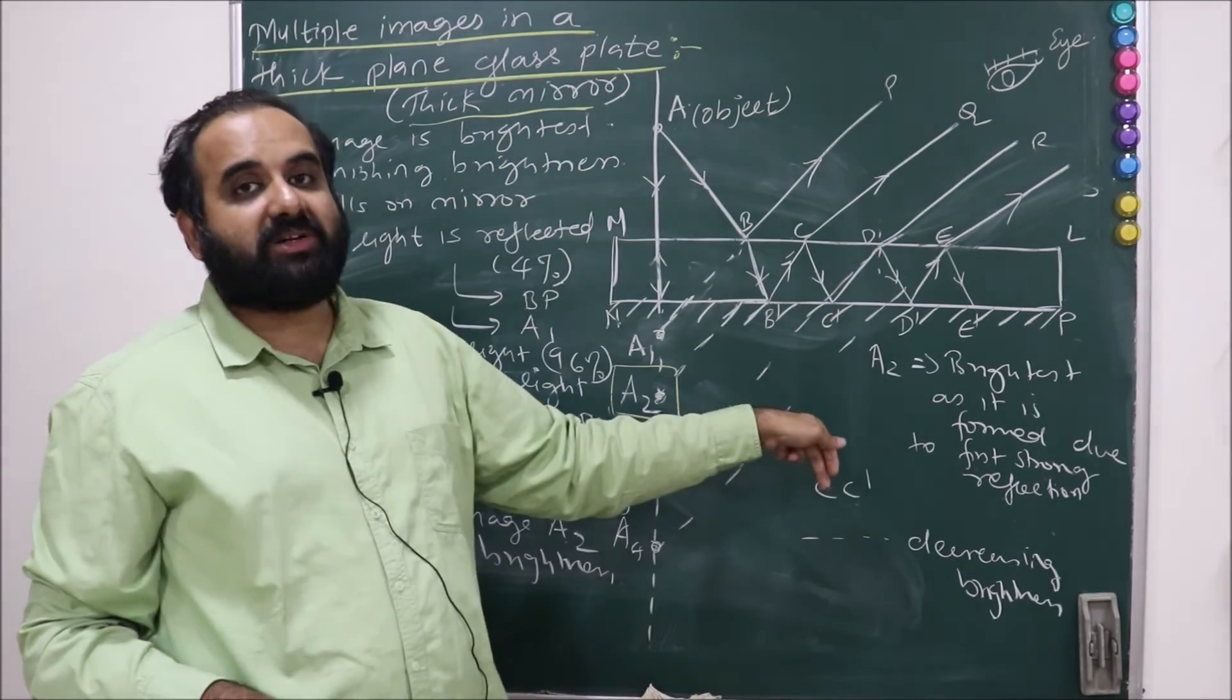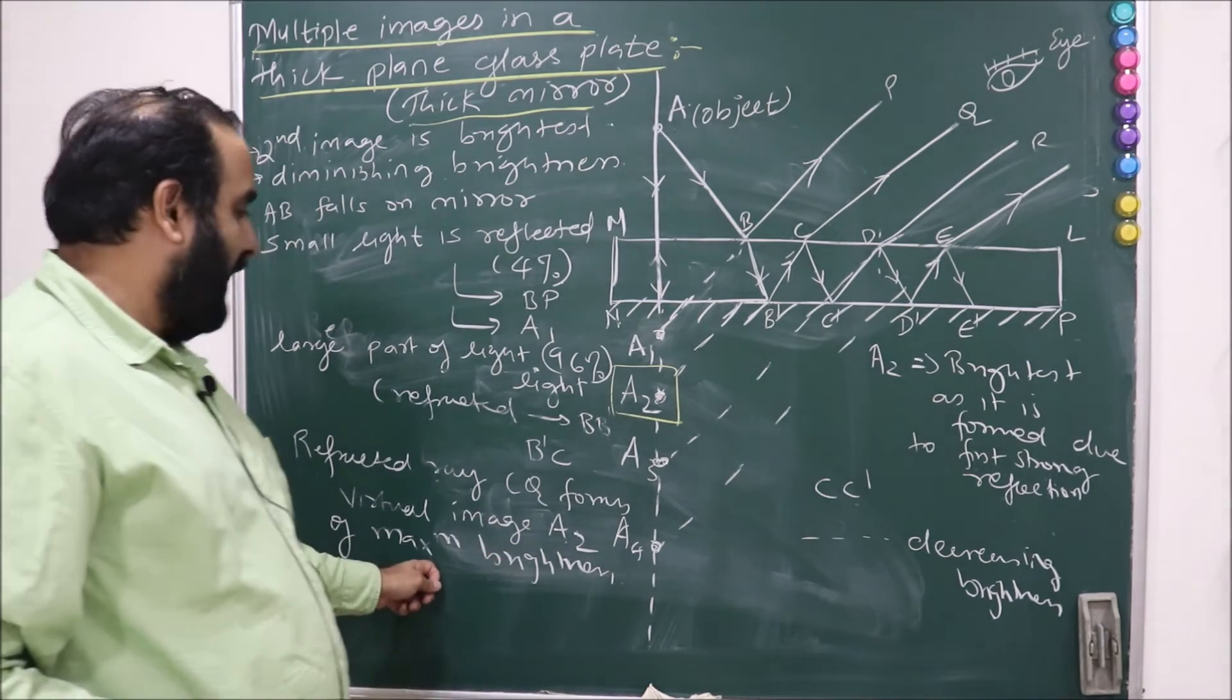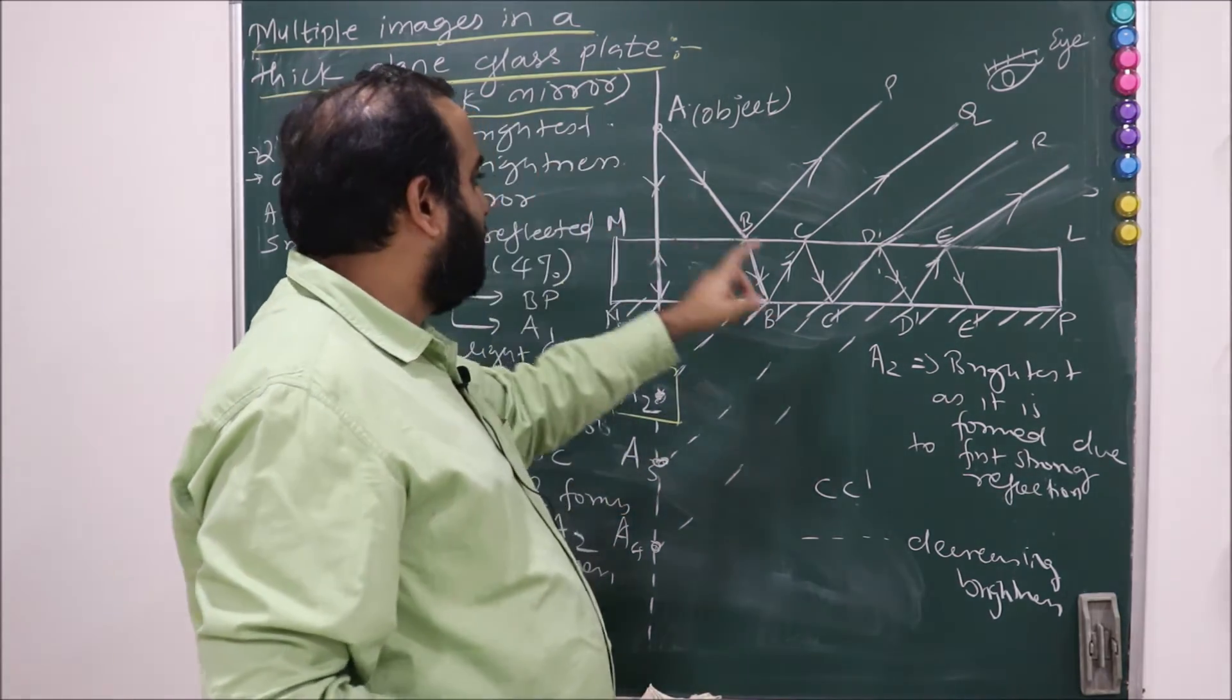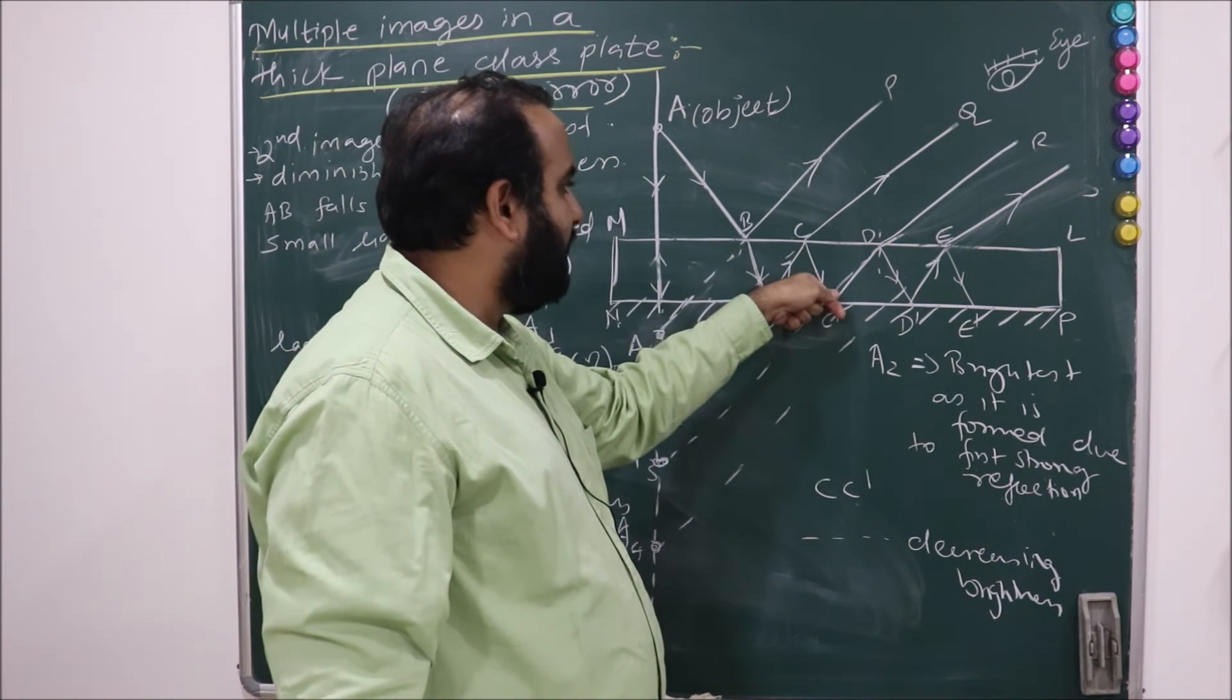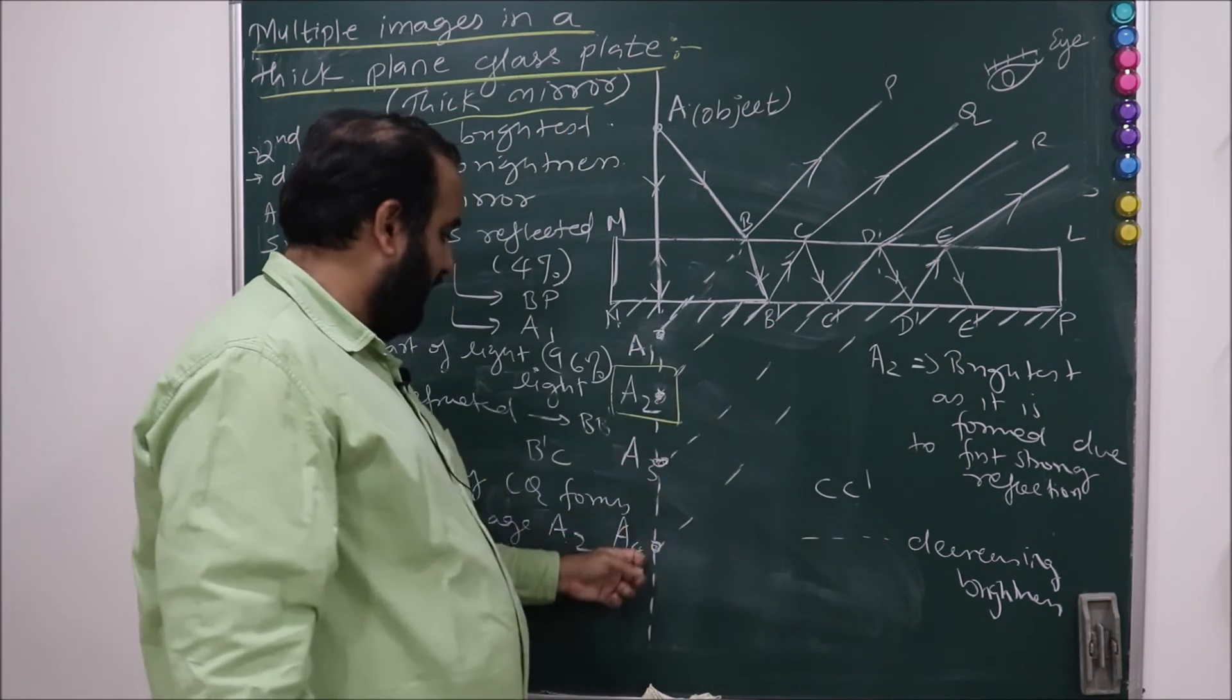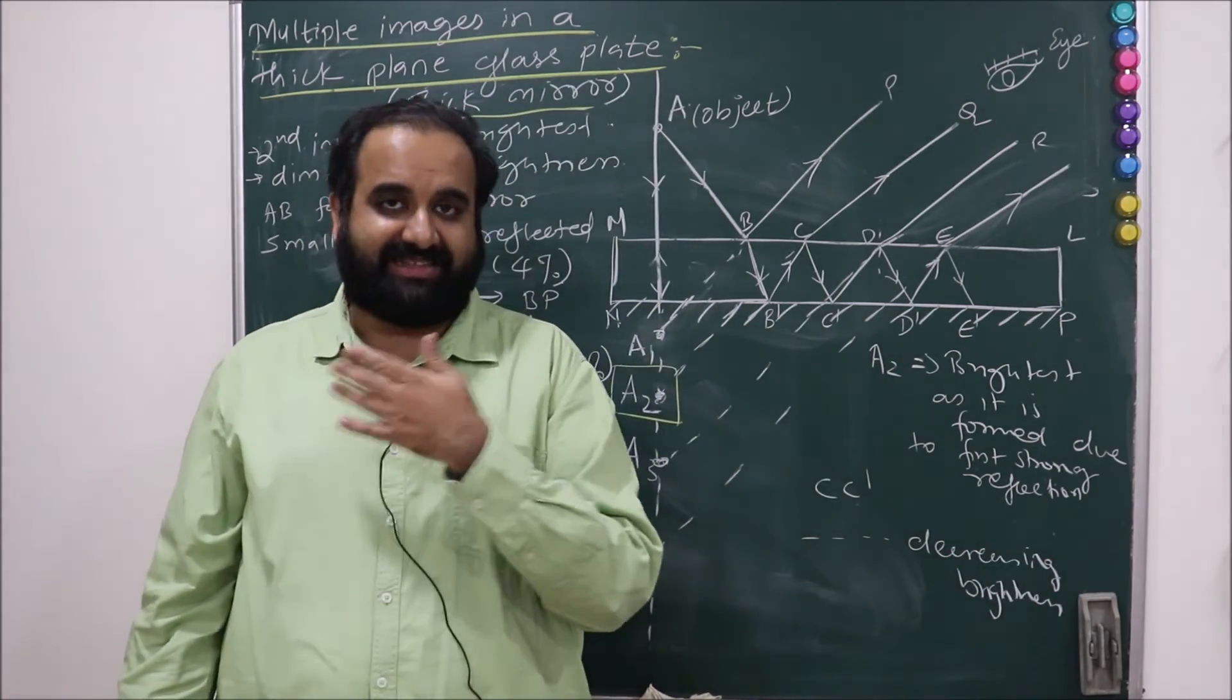We are calling it the first strong reflection because 96% of the light goes inside and this refracted ray CQ forms the virtual image A2, which is of maximum brightness as we have already discussed. Then subsequently, what will happen? Again certain part of light will get reflected and then this process continues with forming images A3, A4 and so on.